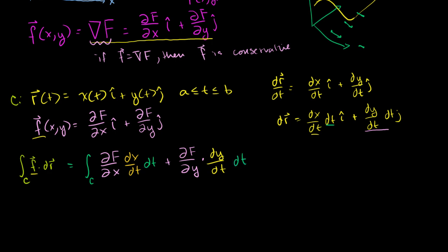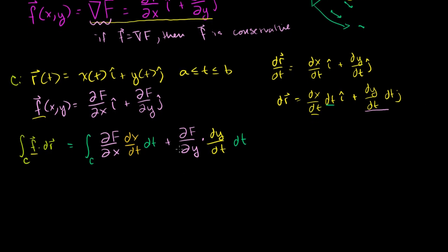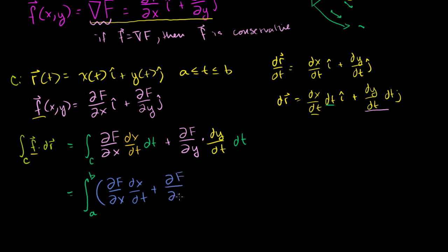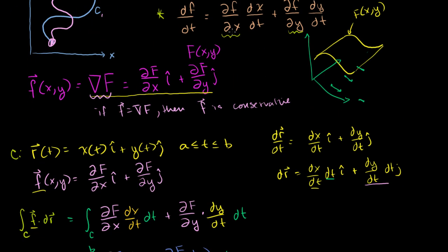Factoring out dt, this equals the integral from t = a to t = b of: the partial of uppercase F with respect to x times dx/dt, plus the partial of uppercase F with respect to y times dy/dt, all times dt. Now you might realize why I talked about the multivariable chain rule — what is this expression inside the integral?